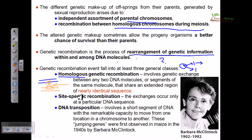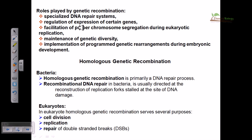This genetic recombination occurs during the independent assortment of parent chromosomes in meiosis, and also through recombination between homologous chromosomes. During meiosis in eukaryotic cells, all the blending and mixing of genetic information occurs. In bacteria and other simple cells, recombination occurs during their cell division, since they are very simple and divide very rapidly.